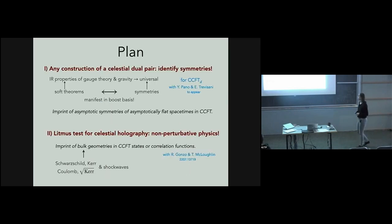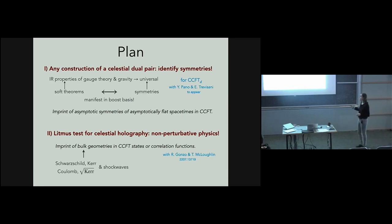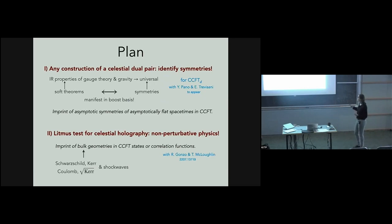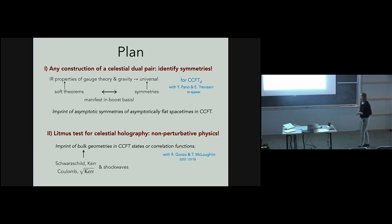The plan of the talk addresses two questions. First, to identify the symmetries of celestial holography—a good starting point is the infrared properties of gauge theory and gravity, since soft theorems have been shown to relate to asymptotic symmetries of asymptotically flat spacetimes. The boost basis makes this connection very manifest, making it the right basis to classify all the symmetries.